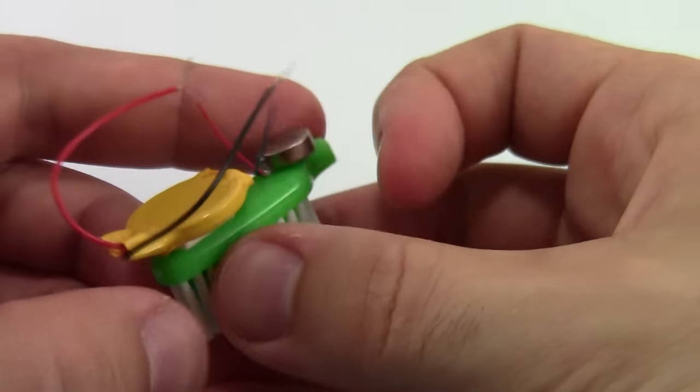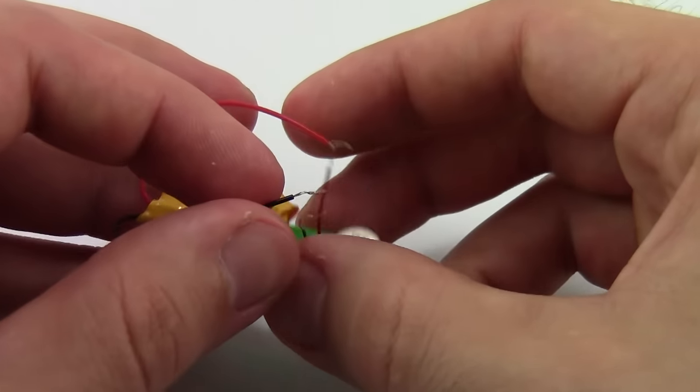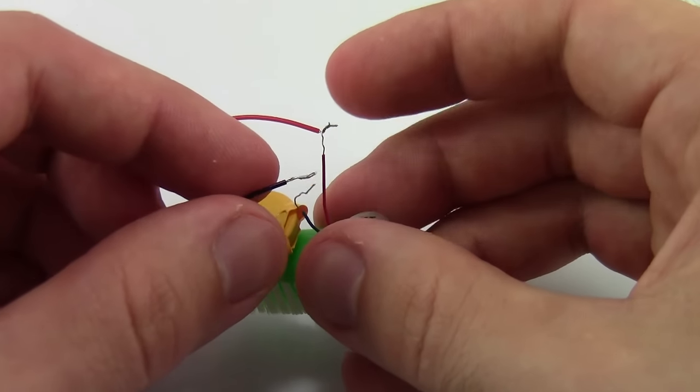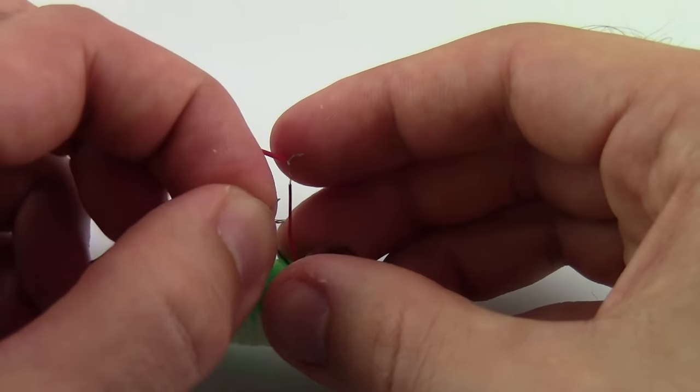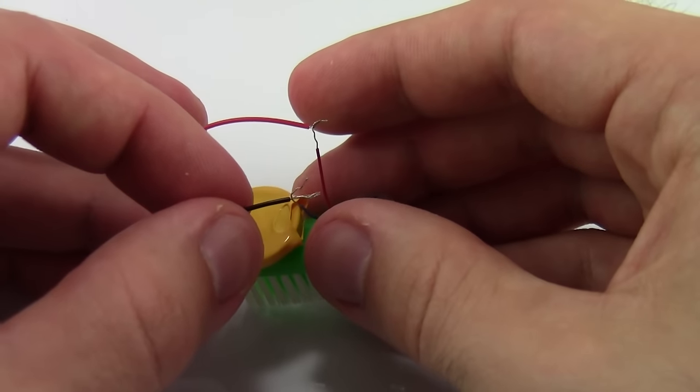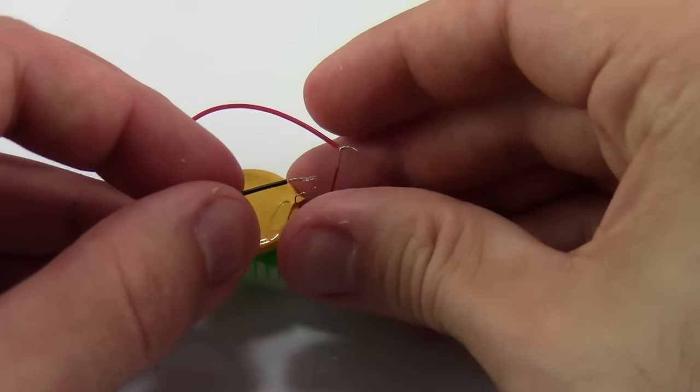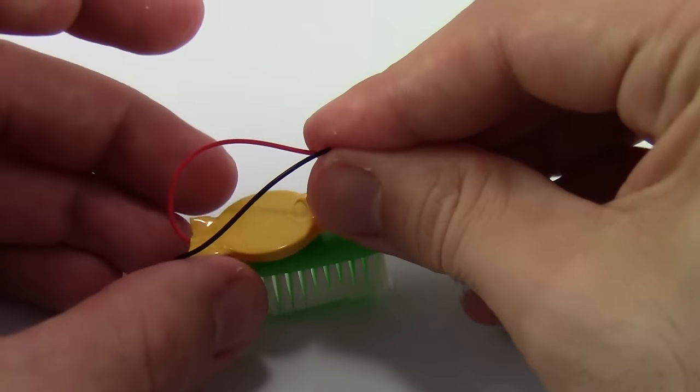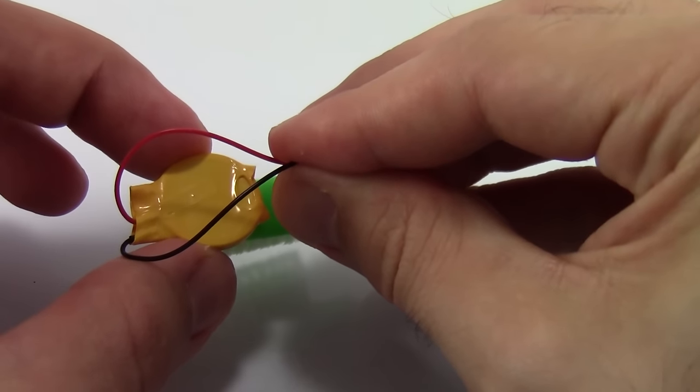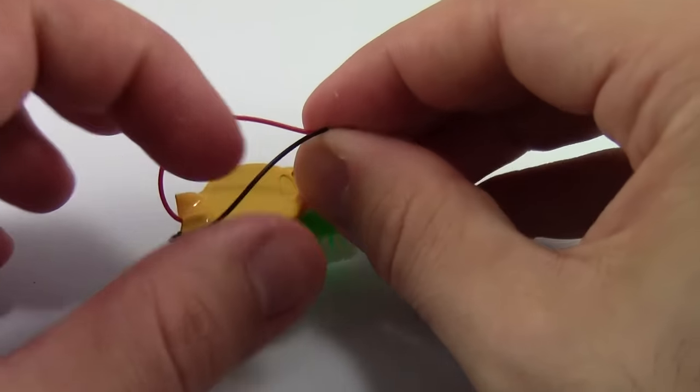It's also important to avoid short circuits by letting the metal parts of the red and black wires touch each other directly. This will cause the battery to drain very quickly and prevent electricity from flowing through the motor so your robot will not move. Notice that when I touch the red and black wires together directly, the robot stops vibrating. This will drain the battery very quickly, so make sure you don't let that happen.